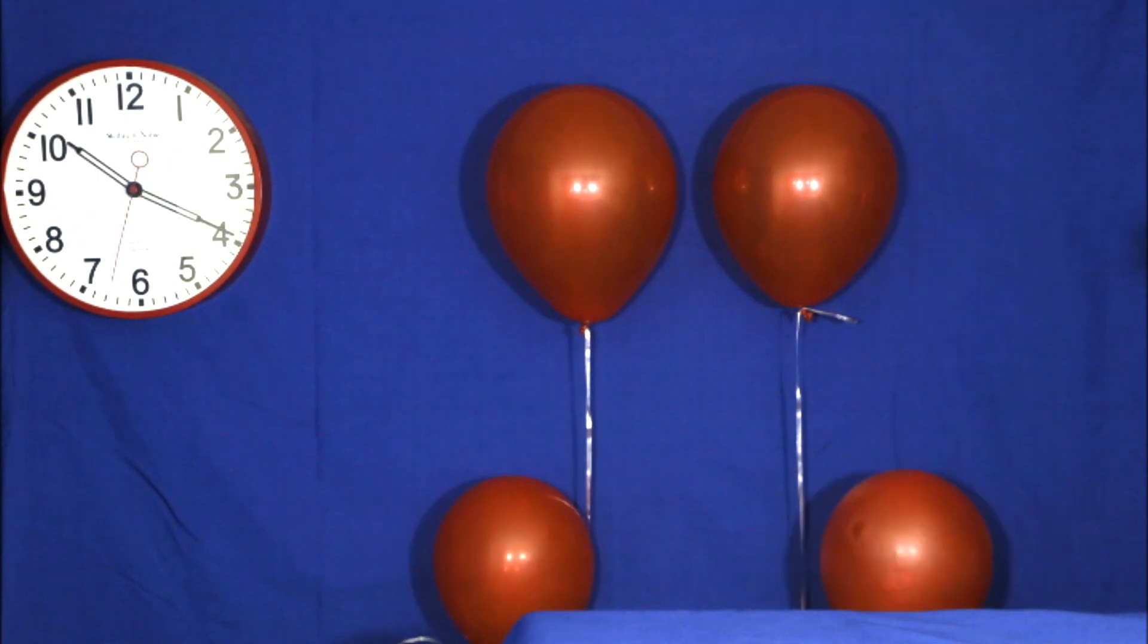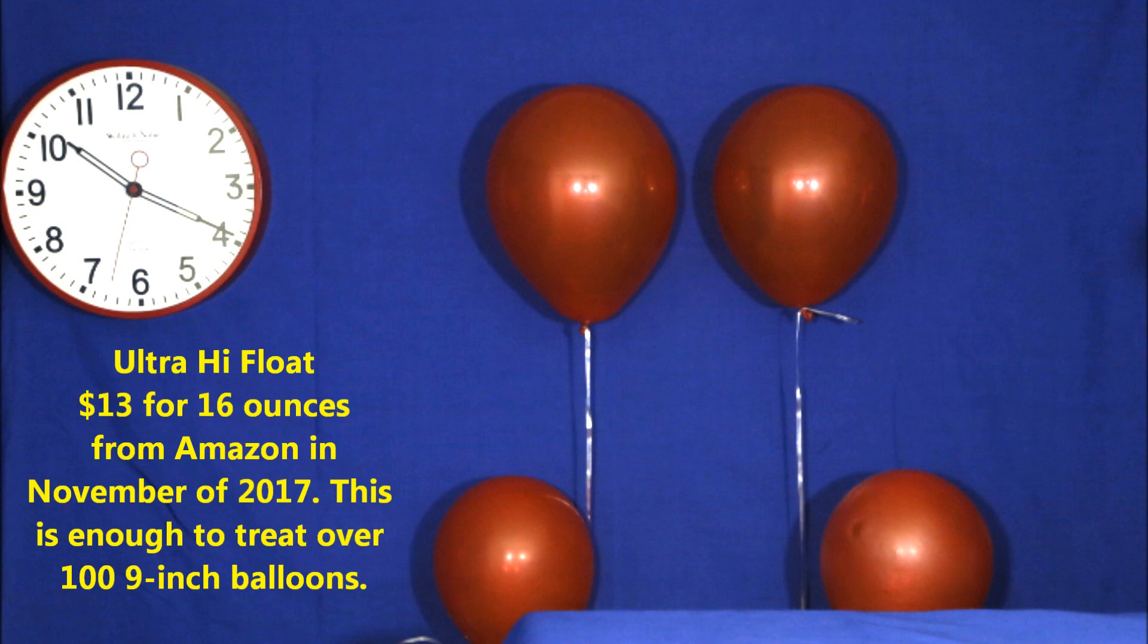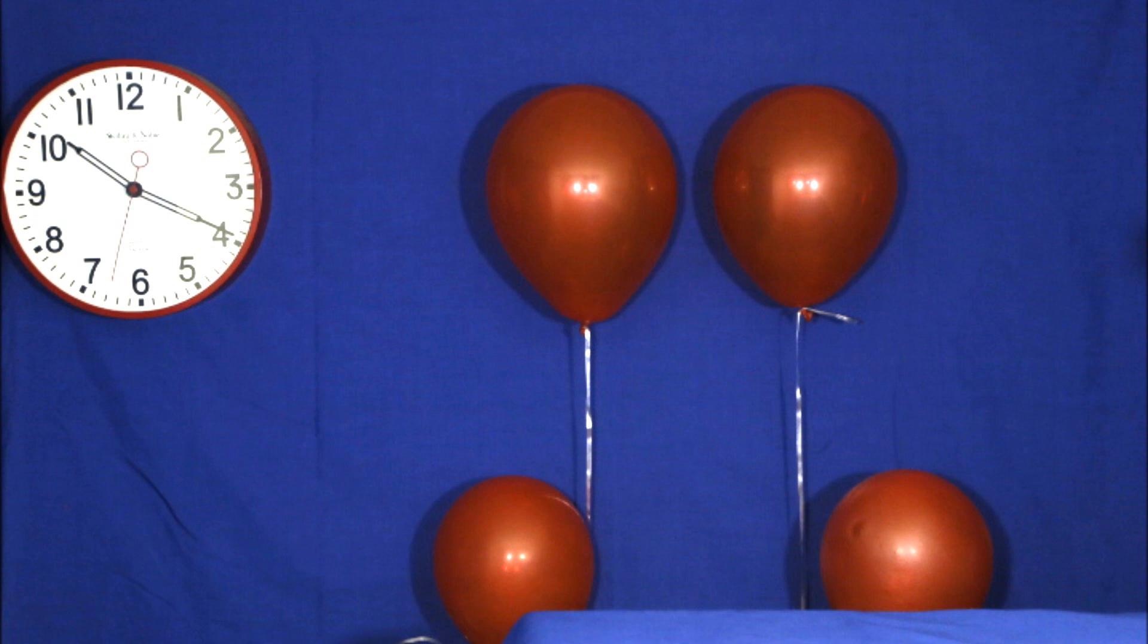The next thing we're going to try is a product called Ultra Hi Float. This is a clear, thick, viscous liquid, which for a 9 inch balloon, you inject about a cubic centimeter into the balloon, massage it around to coat the inside, and then you inflate your balloon. What it's supposed to do is seal up the microscopic pores and the spaces between the molecules of the latex rubber in the balloon so that the helium can't leak out.